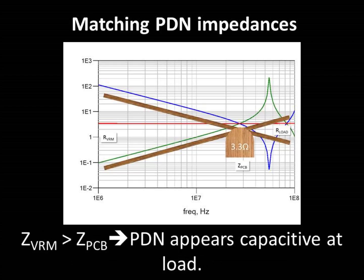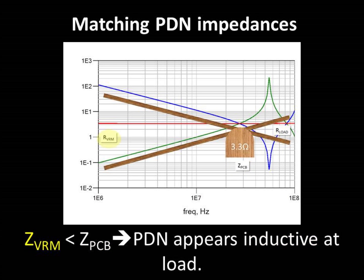If the VRM impedance is greater than the PC board plane impedance, the PDN looks capacitive at the load. If the VRM impedance is below the printed circuit board impedance, the latter will look inductive at the load.